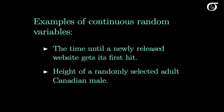Here are a couple of examples of continuous random variables. The time until a newly released website gets its first hit — that has to take on some value greater than 0. And the height of a randomly selected adult Canadian male, again some value greater than 0. In either case there aren't discrete jumps — it's not like a person is 174 centimeters tall and the next possibility is 175 centimeters tall. There's an infinity of values between those two possibilities, so these are continuous random variables.